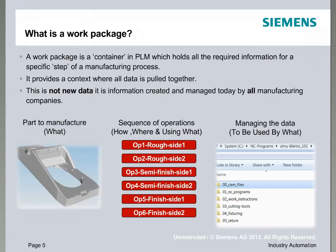What we're going to do is explain what we at Siemens think of as a work package. A work package to us is really a container in PLM which holds all the information that you need for your manufacturing process, for your manufacturing step. It's a way of providing context and bringing all the information together.